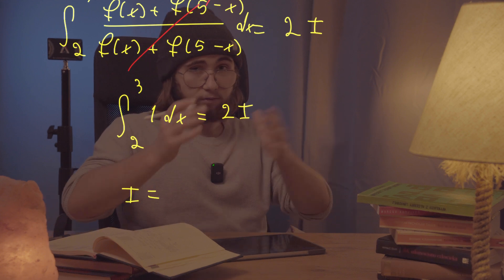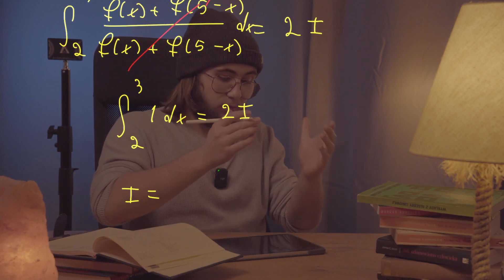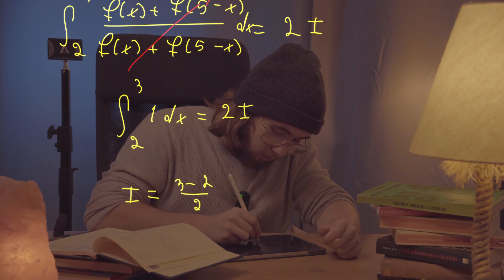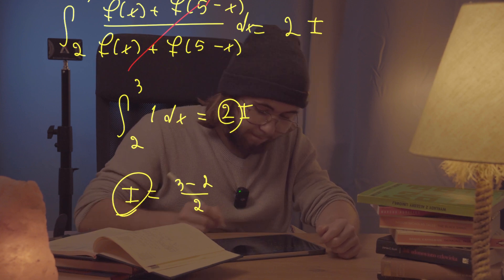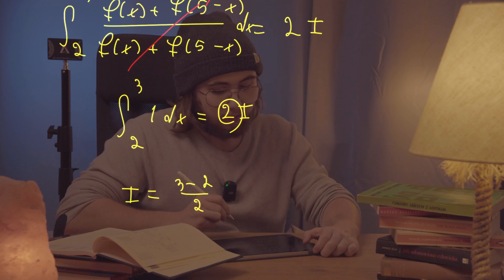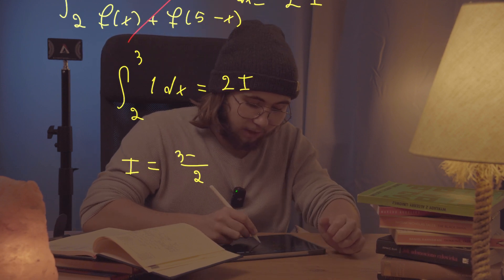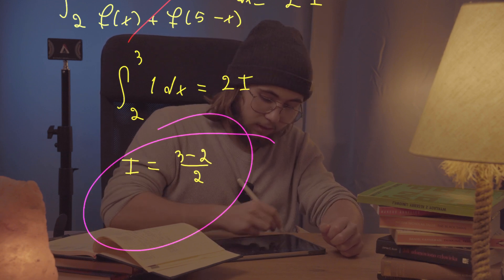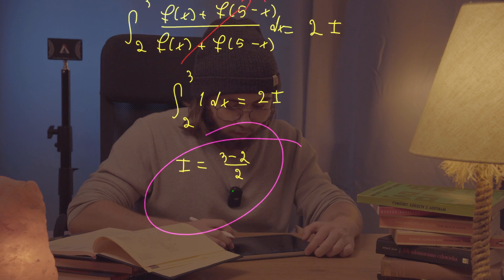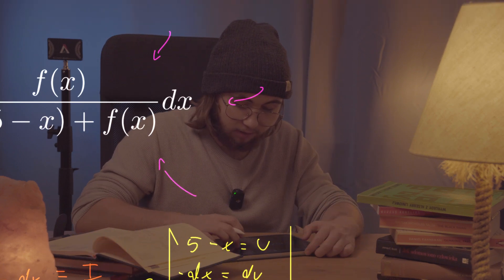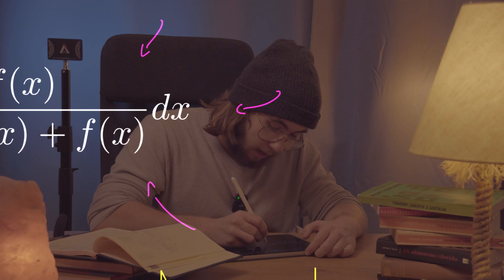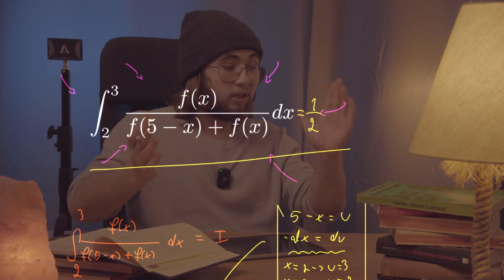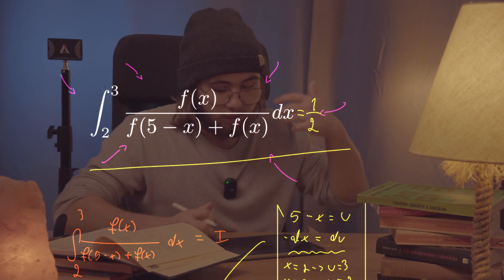So we get that the integral from two to three of one dx equals 2I. The integral of one dx between two and three is just three minus two, which equals one. Dividing both sides by two gives I equals three minus two over two, which is one half. Our integral is equal to one half.